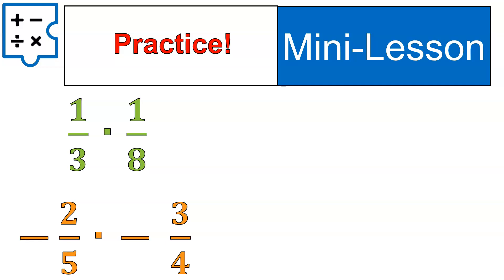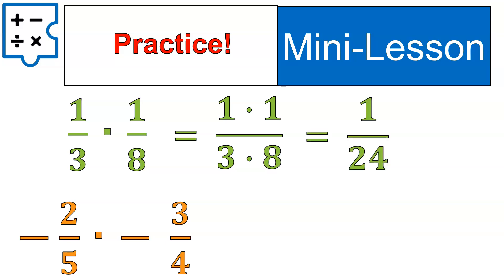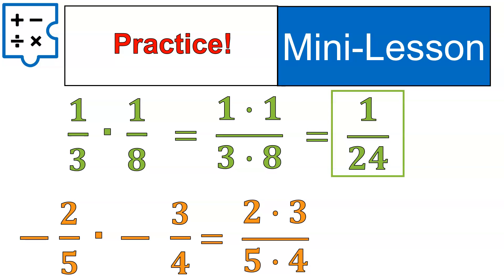Welcome back. One-third times one-eighth: numerator times numerator gives us one times one, which is one. Denominator times denominator gives us three times eight, which is 24. It's a positive times a positive, giving a positive answer: one twenty-fourth. Next one: negative two-fifths times negative three-quarters. It's a negative times a negative, so our final answer will be positive, meaning we can ignore those signs completely.